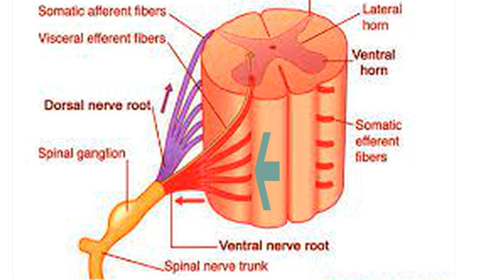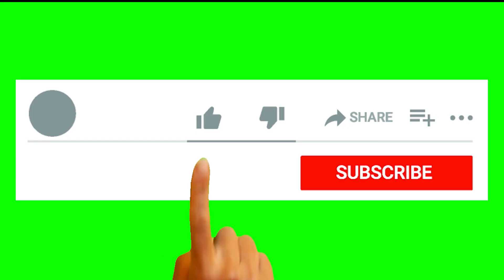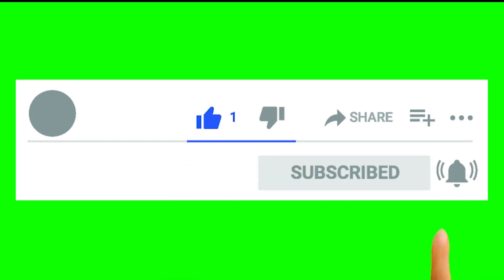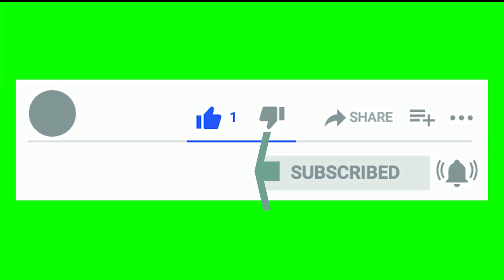What do you mean by ventral? If you stand in front of me, your face will be on my side. So anything in your body that is on my side is ventral, and what is on the opposite side is dorsal. However, in animals, ventral is used for the underside or anything toward the abdominal side.